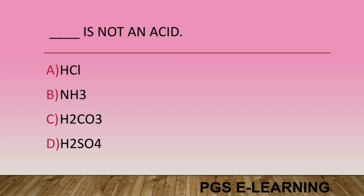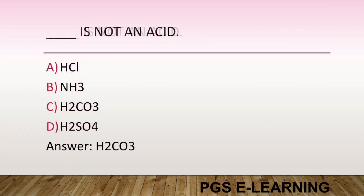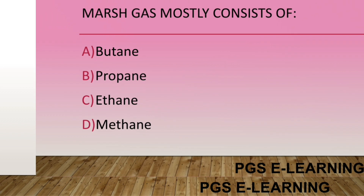Which one is not an acid? Option A, HCl. Option B, NH3. Option C, H2CO3. Option D, H2SO4. Correct answer is NH3.